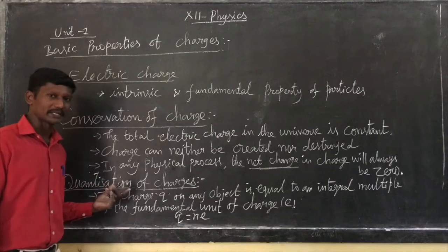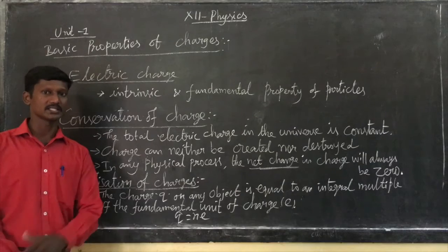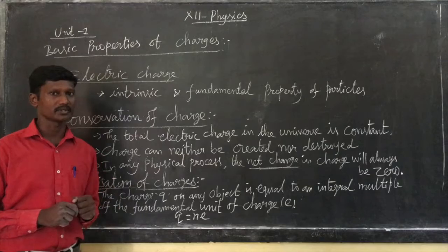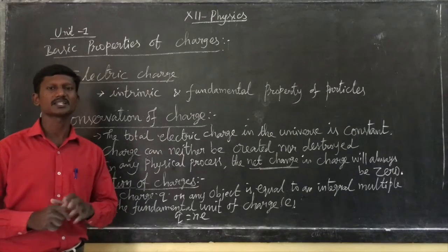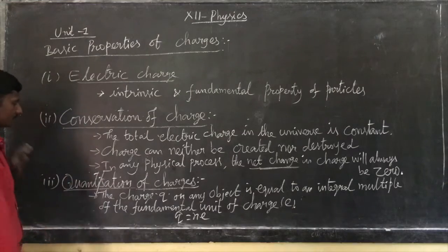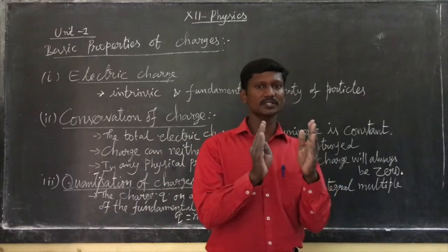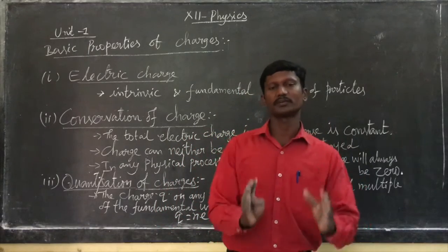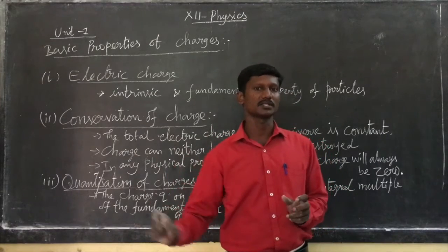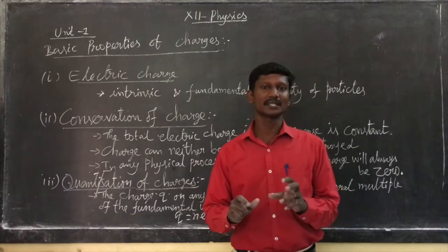Third property: quantization of electric charge. Quantization means quantity, or countable. Quantity means countable, quality means variable or uncountable. So quantization means countable — if you have a charge, you can get a particular value. There can be one charge, two charges, three charges — that means multiple charges, integral multiples of charges.